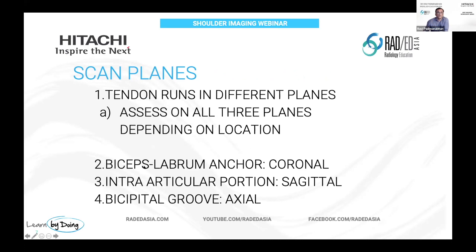If we're looking at the proximal portion — the biceps labrum anchor, where it attaches — probably the best way to look at that is on the coronal scans. If we're looking at the intra-articular portion, it's predominantly the sagittal images; we can see it on the coronal slices, but the sagittal scans are better. And if we're looking at the bicipital groove component, you need to be looking at it on the axial scans, because it's hard to see on the other planes.